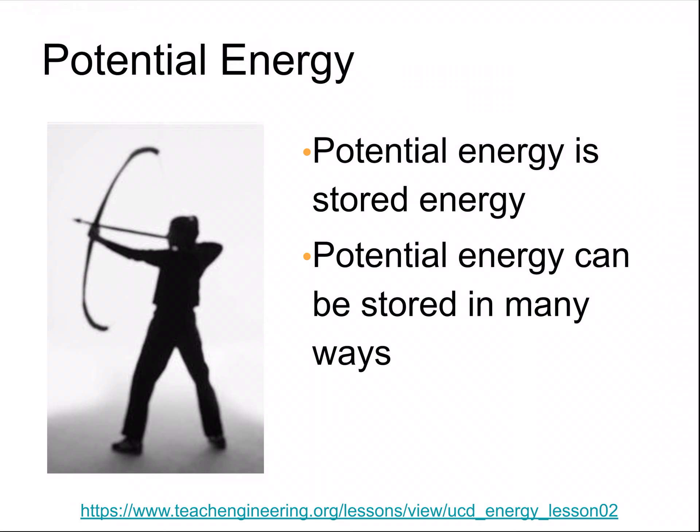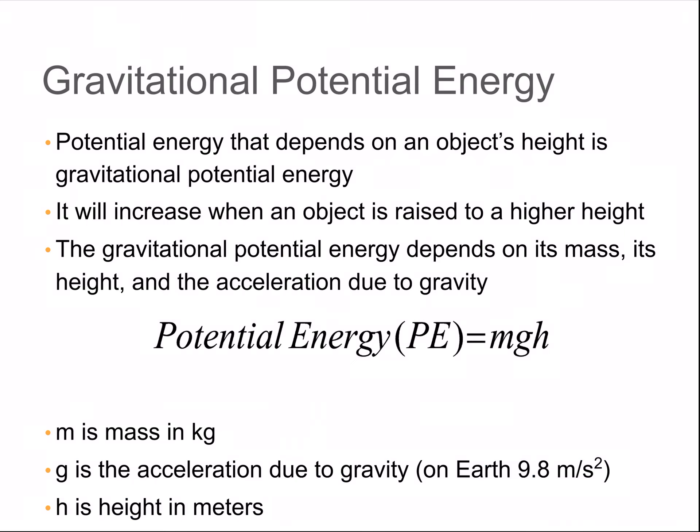Now for potential energy. So potential energy is stored energy. And it can be stored in a variety of ways. So anything from how the person was holding a dumbbell over their head to chemical energy that is stored within bonds. And how we calculate potential energy is different than kinetic. We have to consider the mass still, an acceleration, but due to gravity, and then the height that the object is at. So all of the units, mass in kilograms, g is gravity, and the acceleration rate of gravity is 9.8 meters per second squared. And height is in meters.